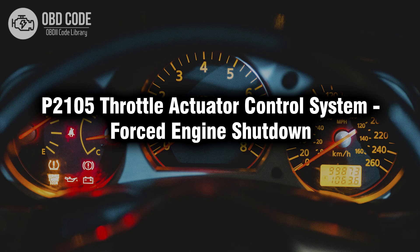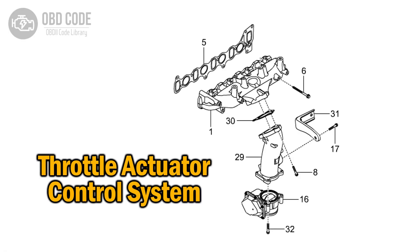Welcome. In this video we will talk about code P2105, its symptoms, causes and possible solutions. P2105 code refers to a throttle actuator control system issue that can lead to forced engine shutdown.